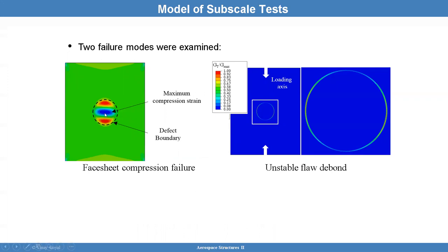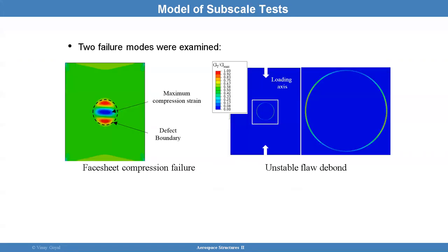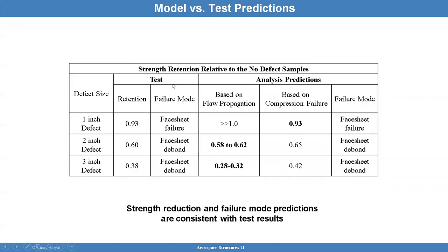The failure modes are: the face sheet can fail locally and break completely, or you can have an unstable flaw that propagates suddenly. Using data from subscale testing and single cantilever beam testing, the modeling did quite well — a one-inch defect showed 0.93 strength retention (7% reduction); two-inch showed 0.65; three-inch showed 0.42, both with a close match to the 0.38 from the model. The one-inch defect failed due to face sheet failure, while two-inch and three-inch failed due to face sheet disbond.